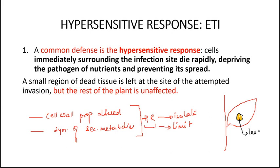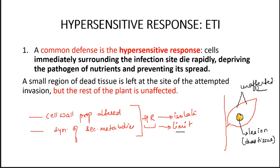Ultimately, the pathogen in this lesion will die because they are deprived of nutrients, and there will be no further spread. Whenever the hypersensitive response is successful, a small region of dead tissue is left at the site of invasion, but the rest of the region is unaffected. The small region remains at the site of the infection, but the rest of the tissue is unaffected due to the several responses seen in the hypersensitive response.